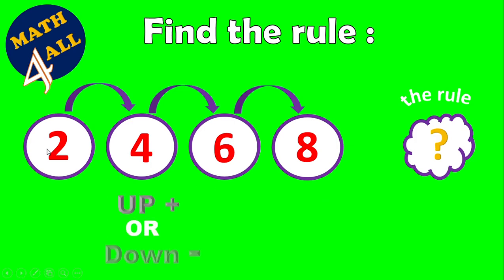If you are increasing, you are counting up, so you are going to add — put a plus sign. If you are decreasing, you are counting down, so you will put a minus sign. For example: 2, 4 — increasing, so we put a plus sign. 4, 6 — increasing, put plus again.